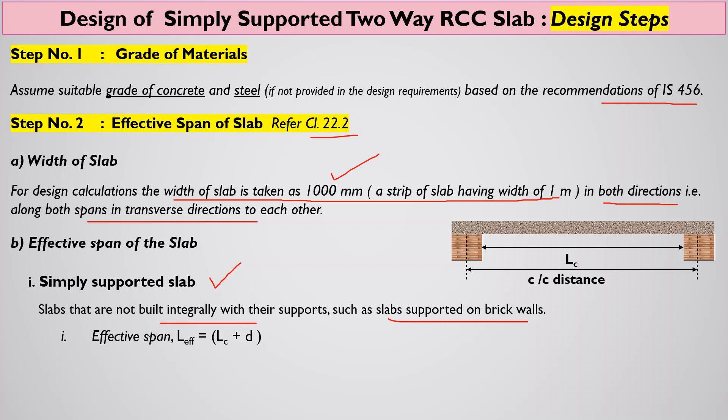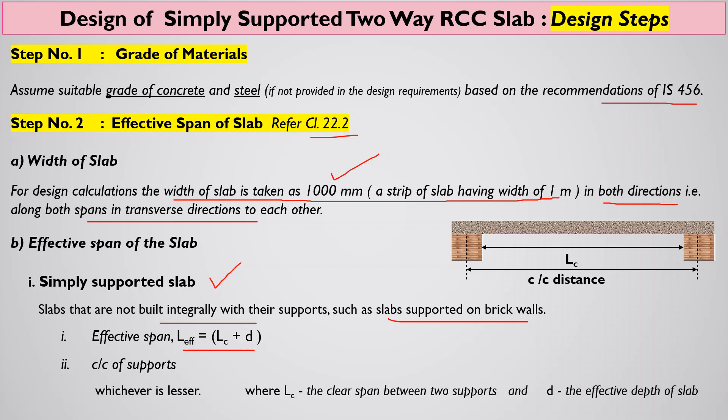To calculate the effective span, we follow the same guideline. First, the effective span equals lc plus d, where lc is the clear span length between two supports and d is the effective depth of the slab. Second, the effective span may be taken as the center-to-center distance of the supports. Whatever is the least value out of these two parameters is taken into consideration.